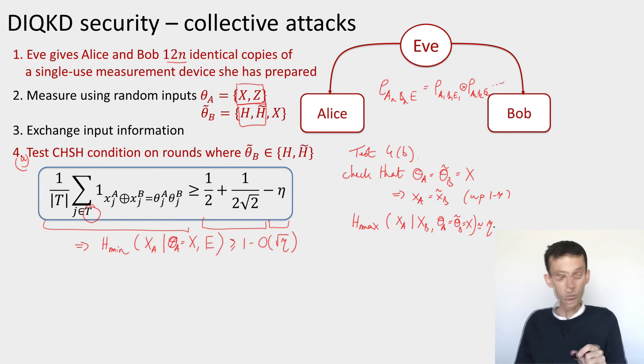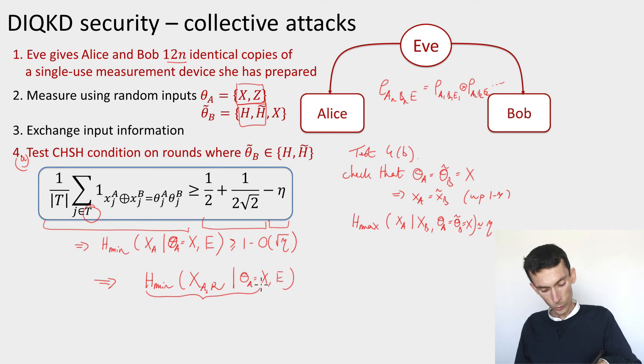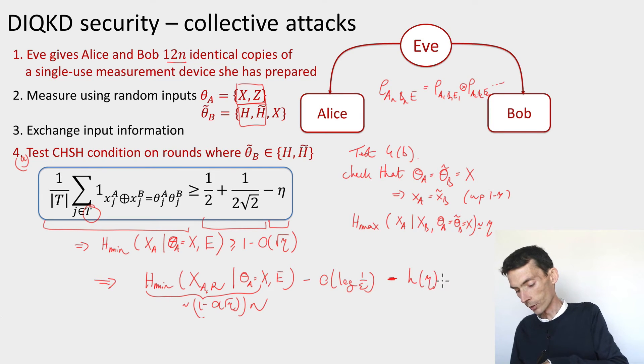Based on these two things, we perform the steps of information reconciliation and privacy amplification. We're going to be able to extract an amount of key which is the min entropy of Alice's bits that she uses as the raw key conditioned on input being x and the side information. This is a quantity which will be roughly 1 minus O(√η) times n. We can get this amount minus some dependency on the error parameter for the privacy amplification step. We also lose some amount due to information reconciliation, which is going to be proportional to the binary entropy of the eta fraction of noise that we tolerate.